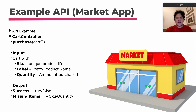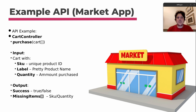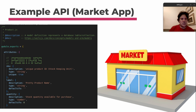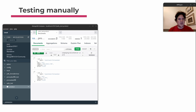We're going to use an API that, in an e-commerce context, purchases all the items from a cart. The input will be an array of cart items with unique product IDs — the SKU (database code for the product), a label (pretty product name), and the amount to purchase (quantity in the cart). The output will be a success true/false, missing items with quantity, and what was purchased.